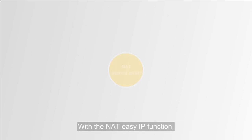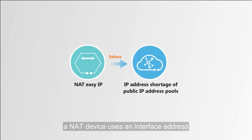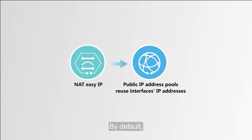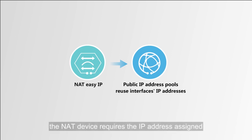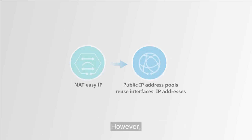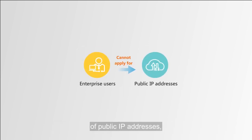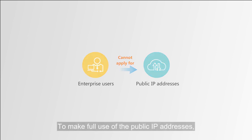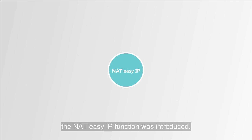With the NAT EasyIP function, a NAT device uses an interface address as an IP address in an address pool. This function is used to mitigate the limited number of IP addresses in a public address pool. By default, the NAT device requires the IP address assigned to an interface to be unique in a NAT address pool. However, an enterprise network has only a limited number of public IP addresses, and enterprise users are restricted in the number of public IP addresses for which they can apply. To make full use of the public IP addresses, the NAT EasyIP function was introduced.